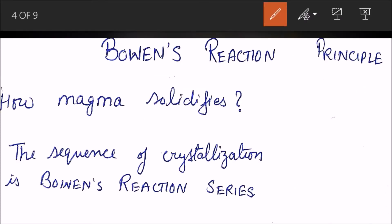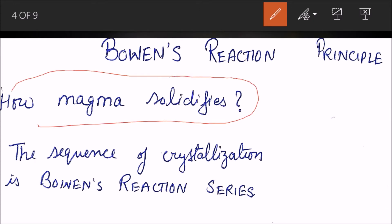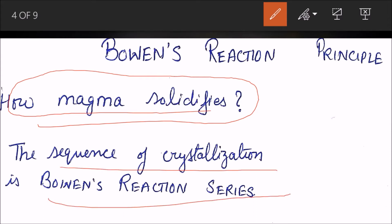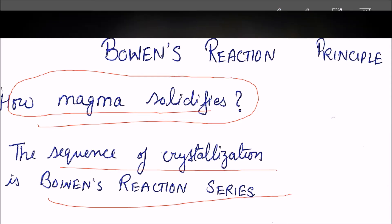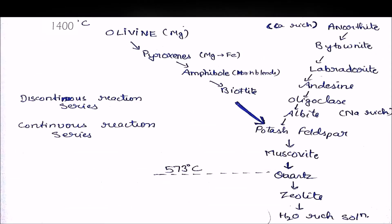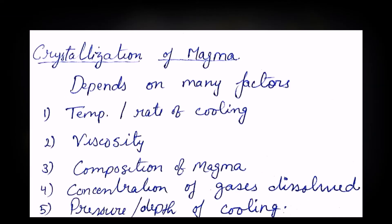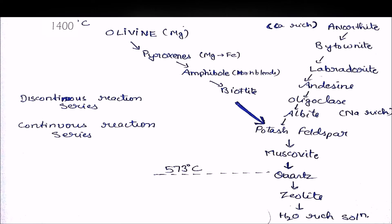The Bowen Reaction Series is all about the solidification of magma — how magma solidifies. It answers the question of how magma solidifies and in what order. That sequence is called the Bowen Reaction Series.